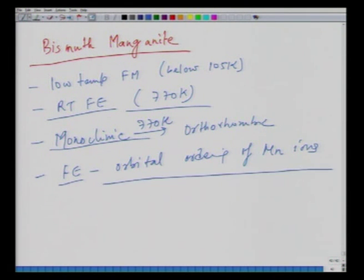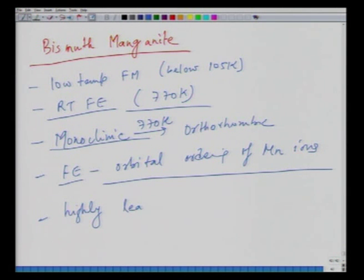The monoclinic structure of BiMnO₃ transforms to orthorhombic at about 770 K, and there is also a lower-symmetry triclinic phase below the monoclinic phase. Ferroelectricity in this material arises from orbital ordering of manganese ions. The problem with this material is that it is highly leaky, making it very difficult to fabricate in a resistive form needed for ferroelectric characterization.